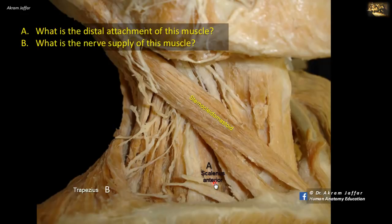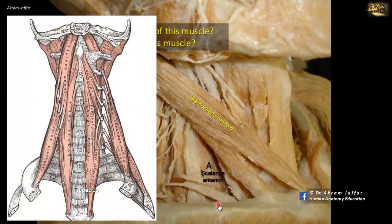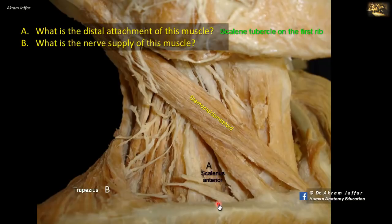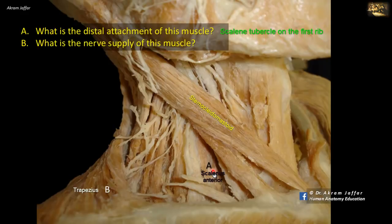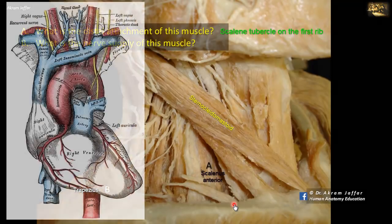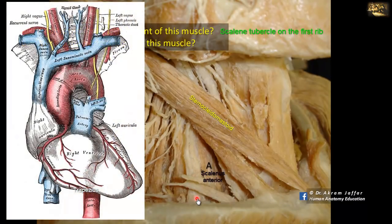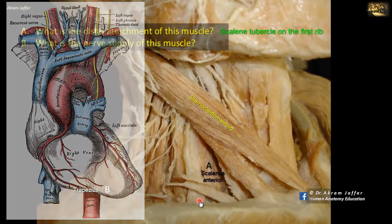The scalenus anterior muscle is distally attached to the first rib, specifically to the superior surface of the first rib. There is a tubercle on its medial border called the scalene tubercle, to which scalenus anterior is attached. In front of scalenus anterior, related to the superior surface of the first rib, is the subclavian vein, and behind it is the subclavian artery and the inferior trunk of the brachial plexus.